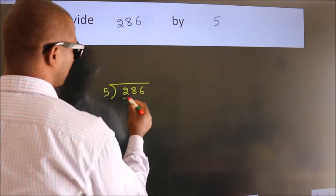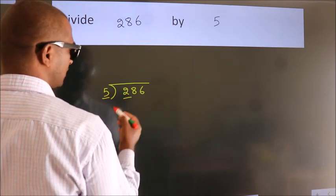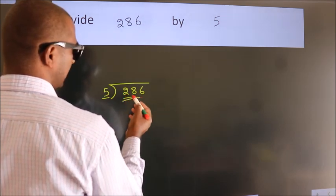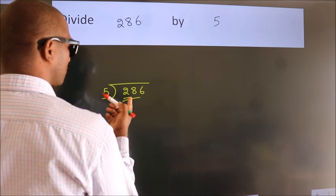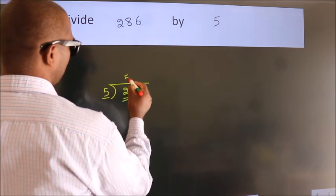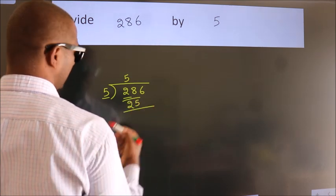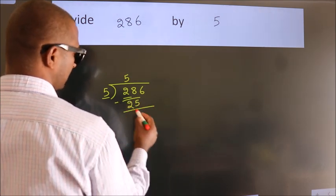Here we have 2. Here 5. 2 is smaller than 5, so we should take 2 numbers: 28. A number close to 28 in the 5 table is 5 times 5 equals 25. Now we should subtract. We get 3.